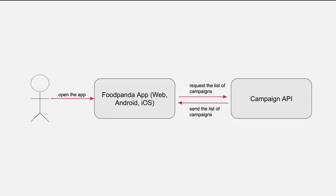This is the simplified architecture of the process. The user opens the app, the app requests the list of campaigns from the campaign API, and then the campaign API sends the list of campaigns back. The user can then see the campaigns from the app.